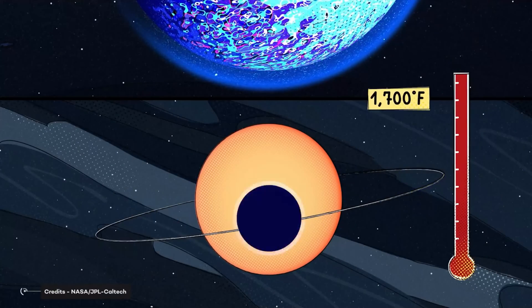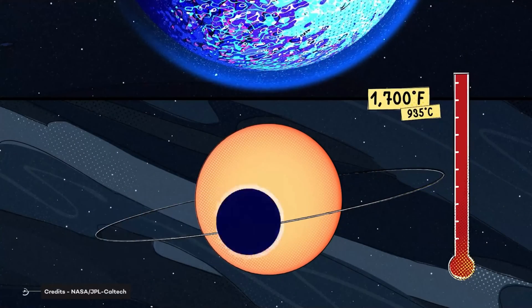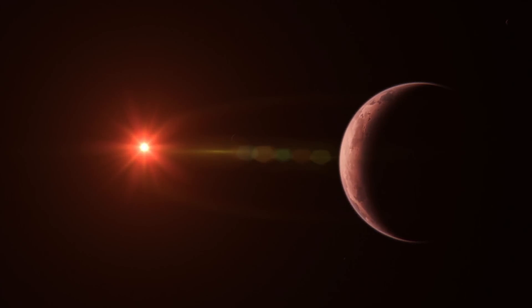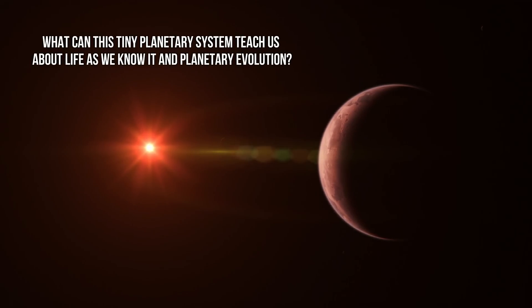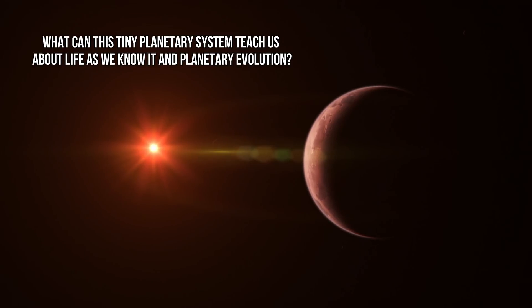But perhaps the most interesting part is that almost 10 percent of these exoplanet observations will be used to stare at the distant and mysterious star TRAPPIST-1. TRAPPIST-1 is known to have planets orbiting around it. What can this tiny planetary system teach us about life as we know it and planetary evolution? Let's find out!